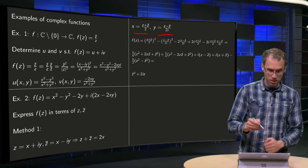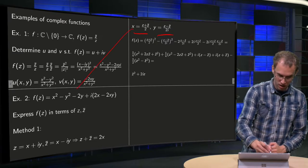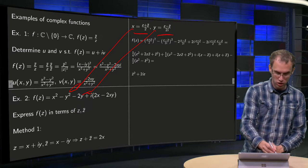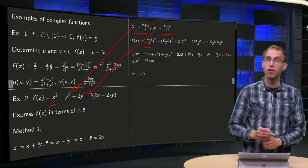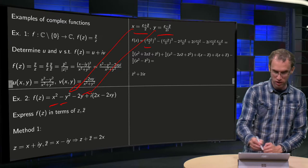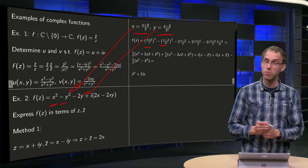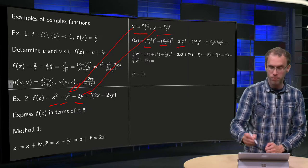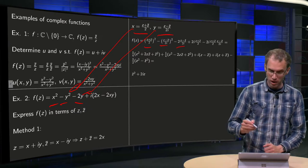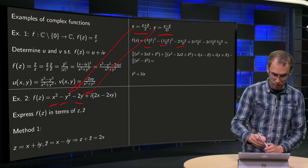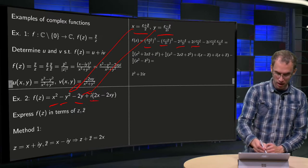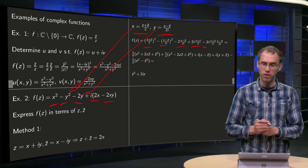Now you can plug those x's and y's in everywhere in your function, so the x² becomes (z + z̄)²/4, minus y² becomes minus (z - z̄)²/(2i)², minus 2i becomes minus 2(z - z̄)/(2i), and then we have 2ix over here, and then minus 2ixy.